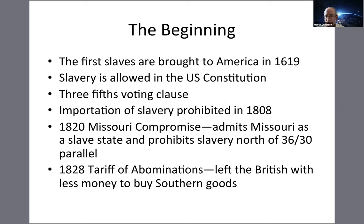In 1820, there was the Missouri Compromise. New states were coming into the Union, and the agreement was that Missouri came in as a slave state, but slavery would be prohibited north of the 36°30' parallel. That kept the country together for a little while.